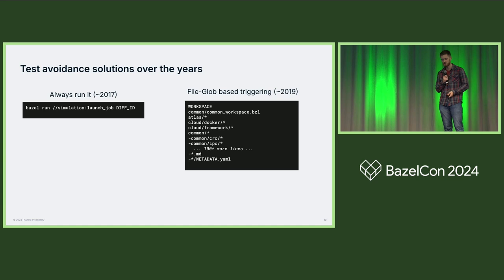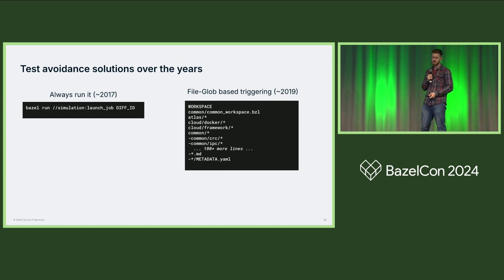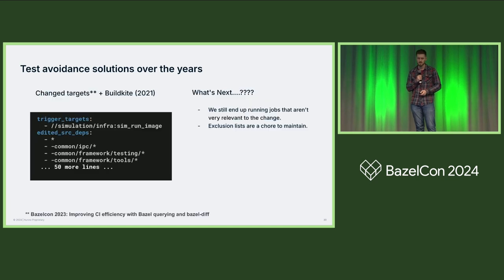After that, maybe you say, let's not run it all the time, but only when specific files are changed. You can set up: when we see a diff change this file, but not those, then run this thing. That works pretty decently, but it's a lot of management and overhead, and it's easy to make mistakes.